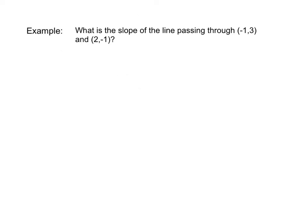So using an actual problem, we are given this example. What is the slope of the line passing through negative 1, 3, and 2, negative 1? So our formula we know, and all we have to do is plug into this formula. So let's label our points, so we have x sub 1, y sub 1, x sub 2, y sub 2, and then plugging in.